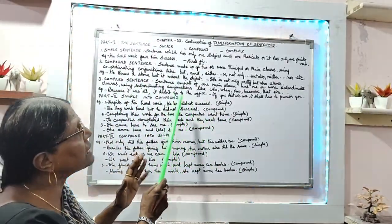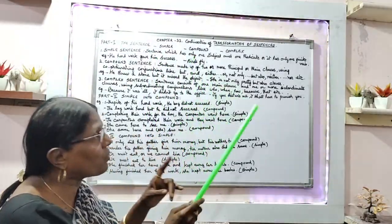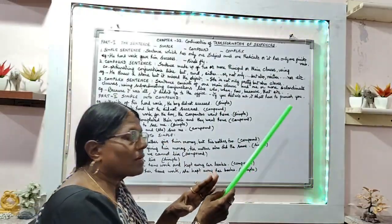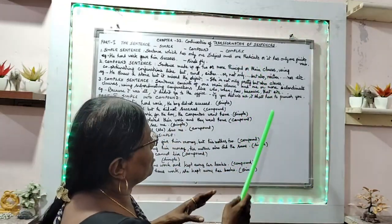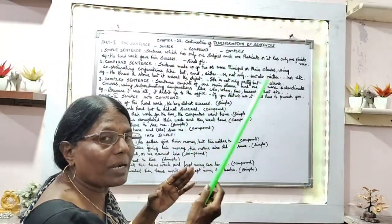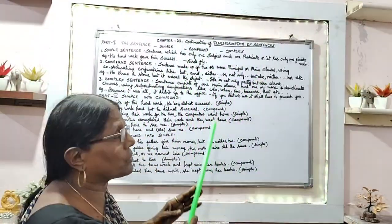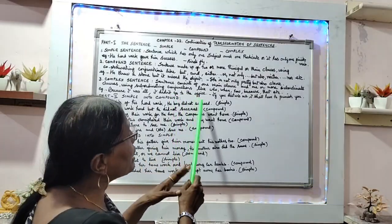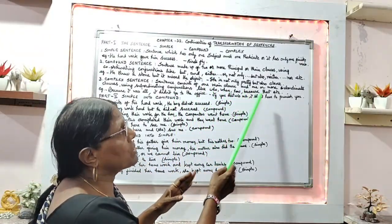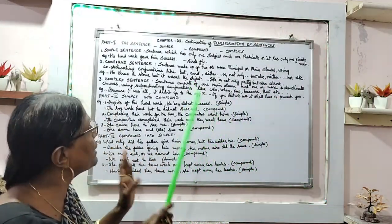Next is complex sentence. What is a complex sentence? A sentence that consists of one main clause but more than one subordinate clause. You will find subordinate clauses joined using subordinate conjunctions. The subordinate conjunctions include: 'who,' 'when,' 'how,' 'because,' 'that,' etc. These are all subordinate conjunctions.